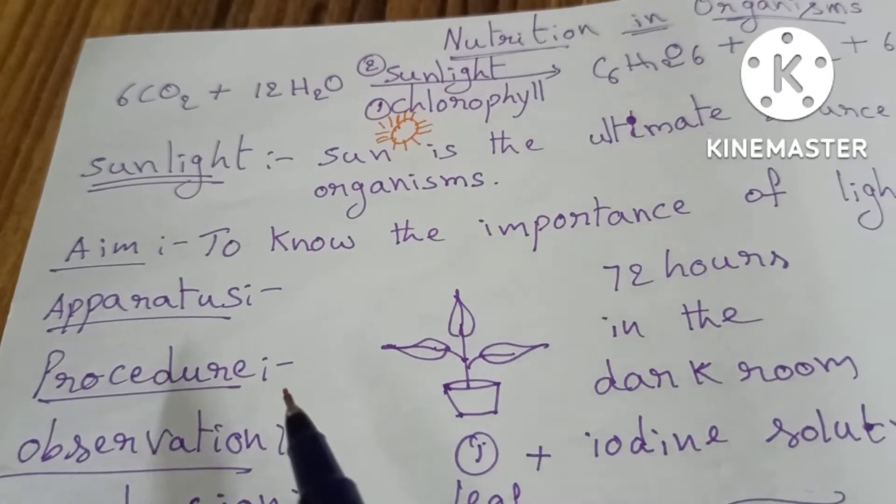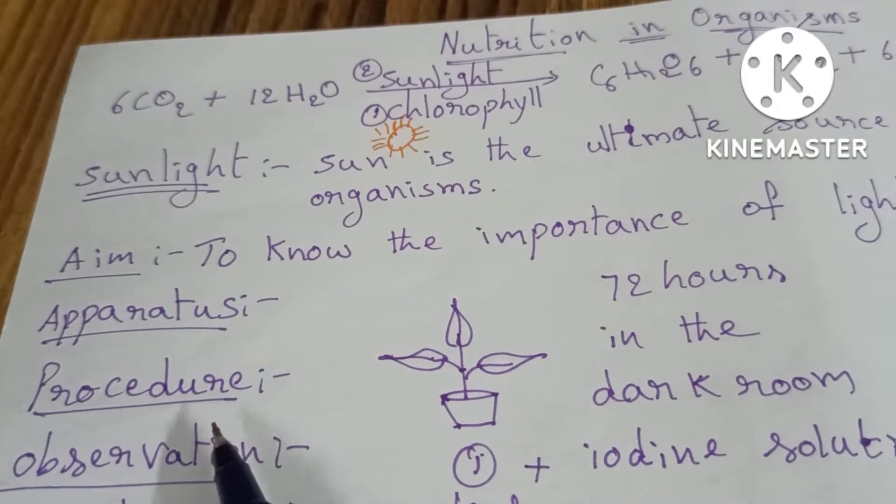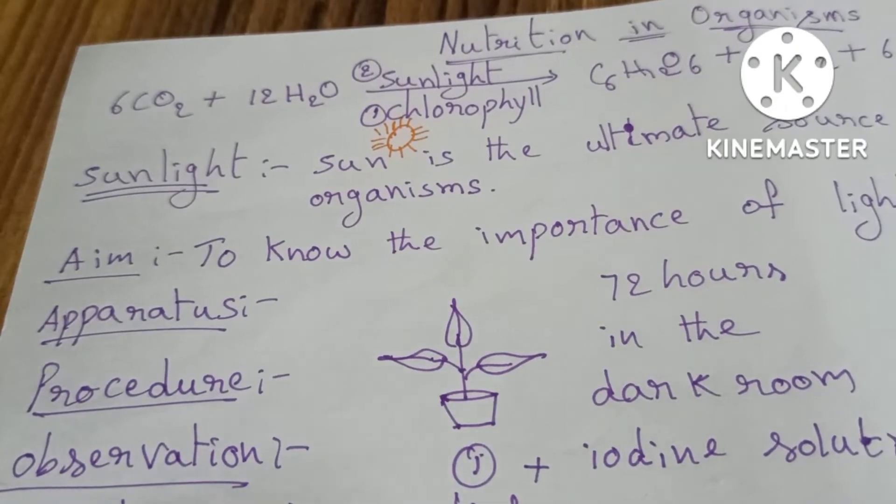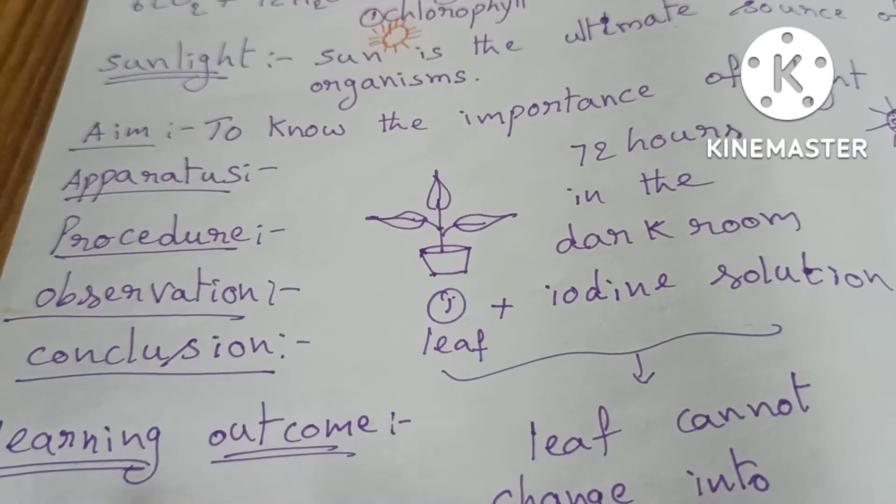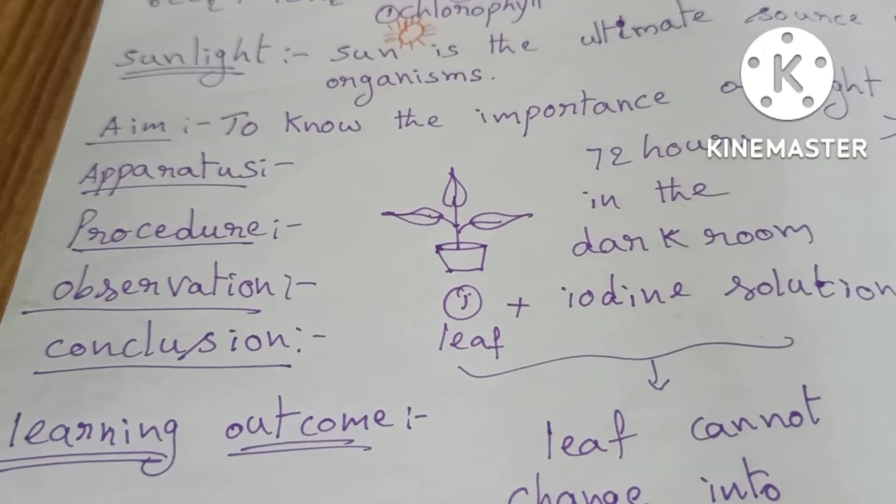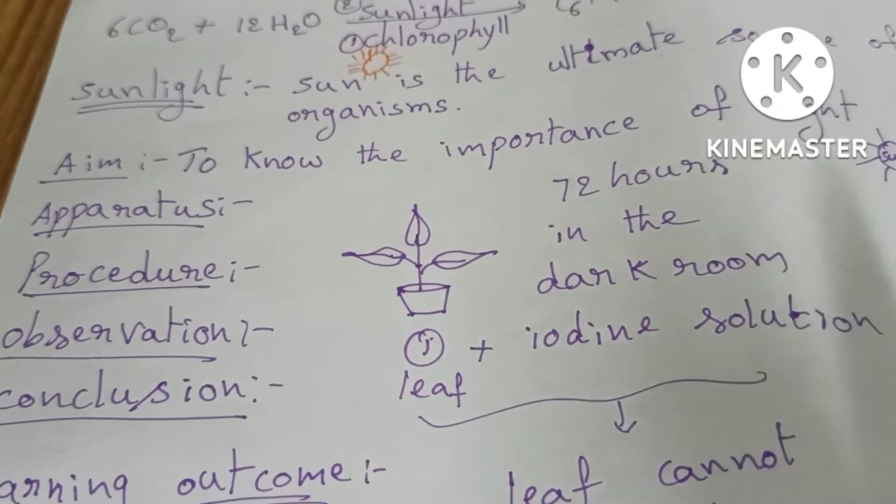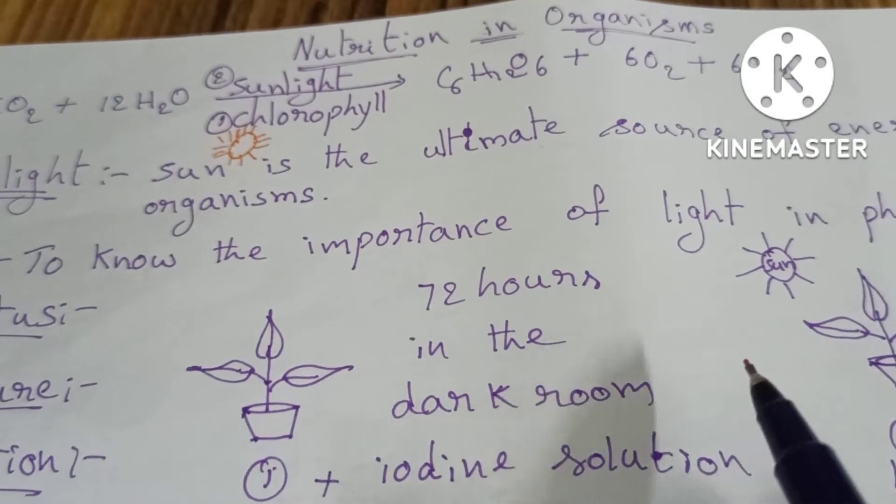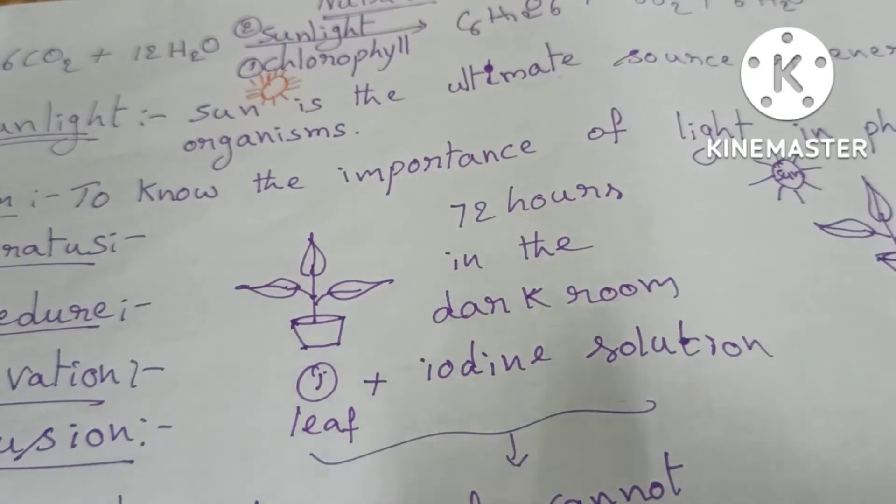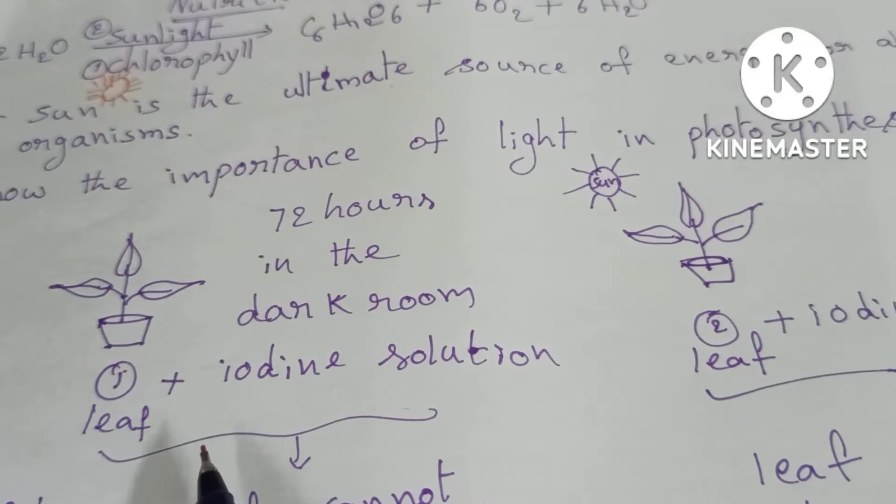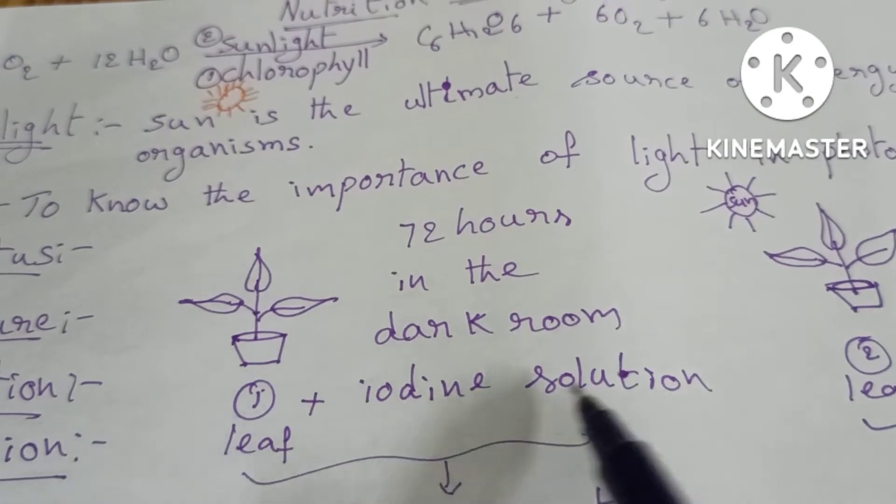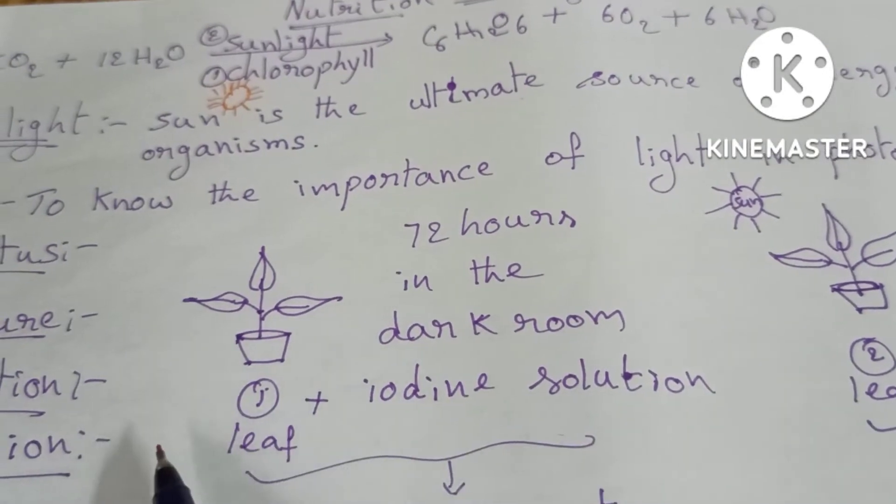In the experiment, I will explain: aim, apparatus, procedure, observation, conclusion, and learning outcomes. The learning outcome is to know the importance of light in photosynthesis. For that, we will take two potted plants.